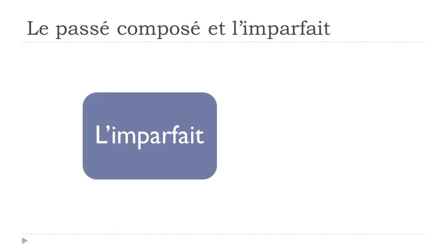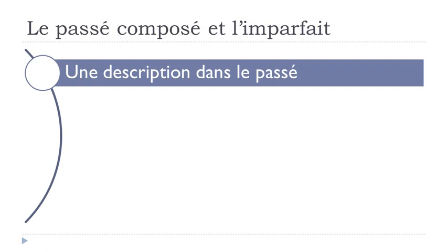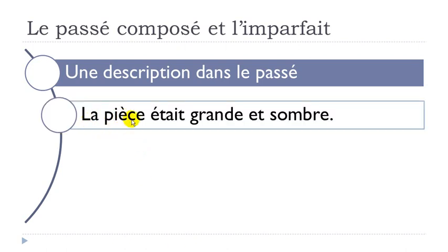In this video, I will first focus on l'imparfait — when should we use it — and then le passé composé. So the first use of l'imparfait: remember that you use it when you want to describe something in the past. The example I took: 'la pièce était grande et sombre.' La pièce means the room, grande means big, sombre means dark. In that case you use être — to be — at the imparfait form to make this description.